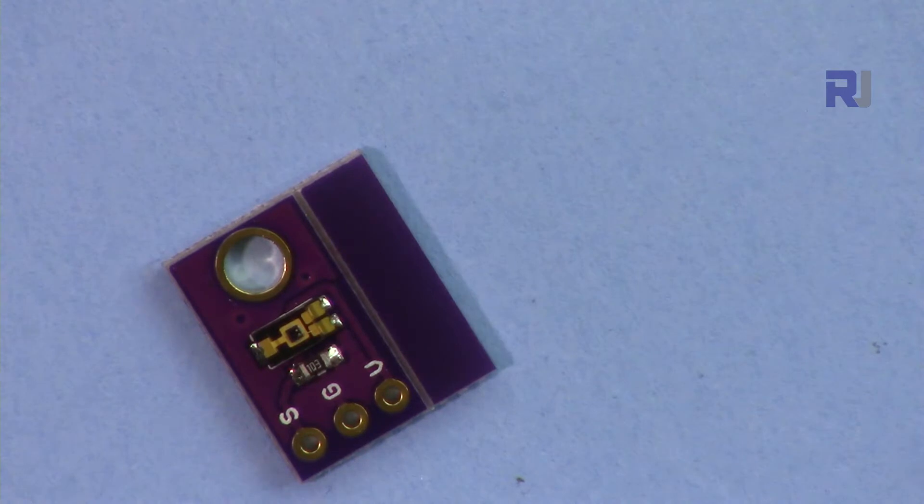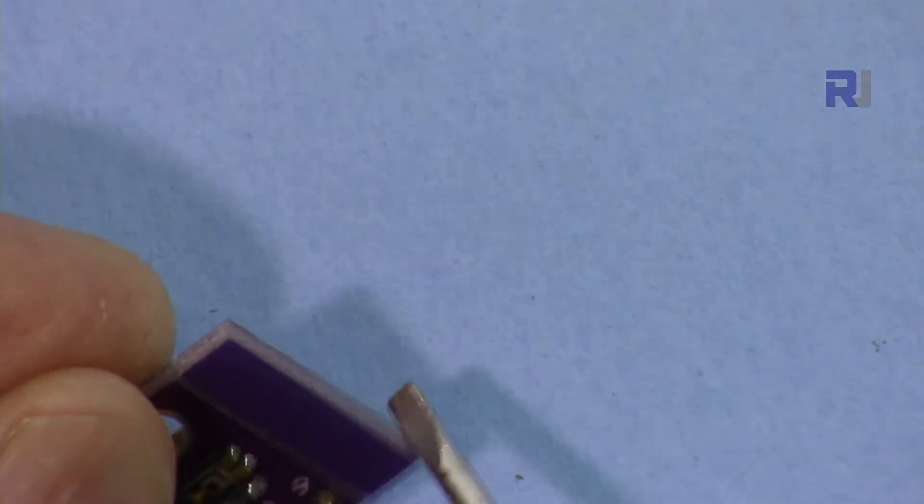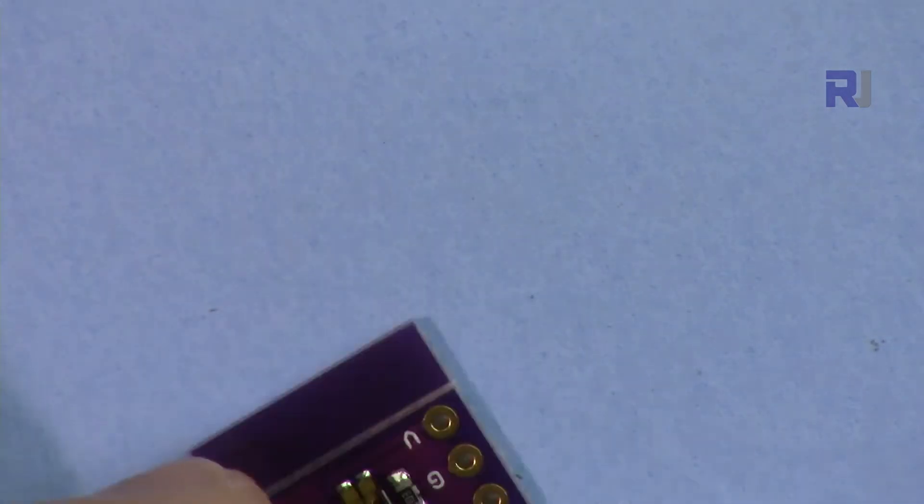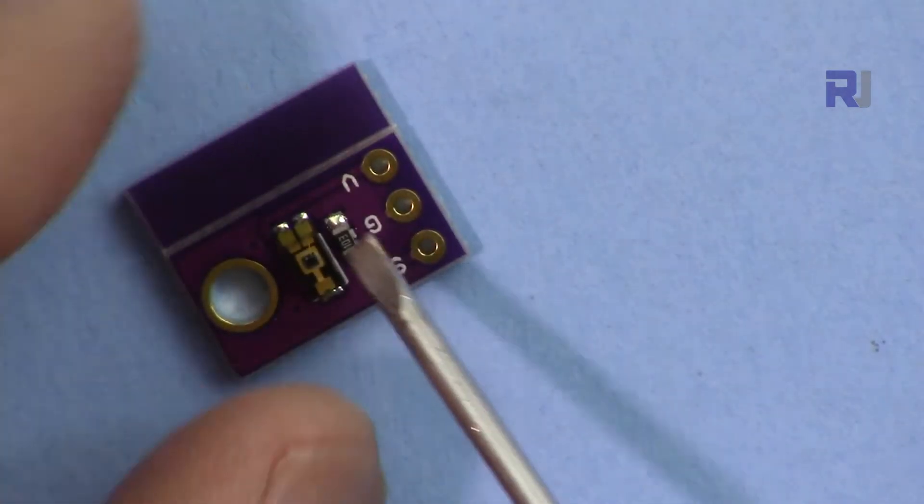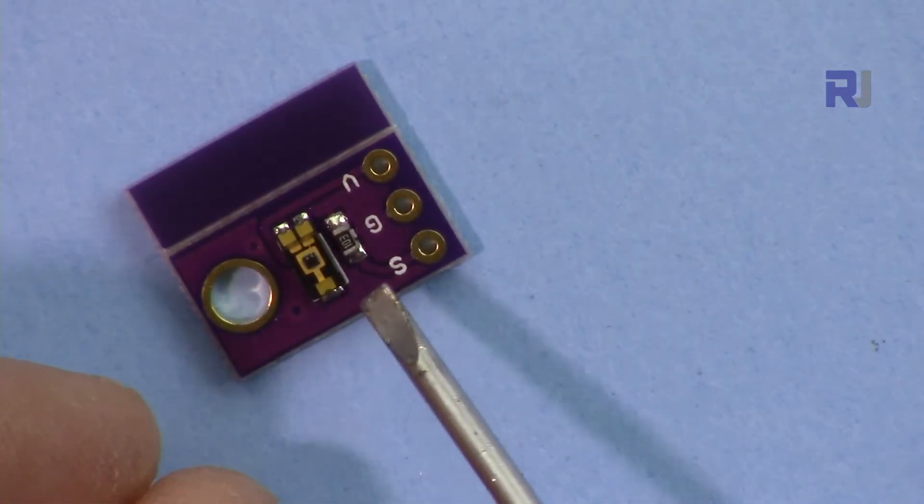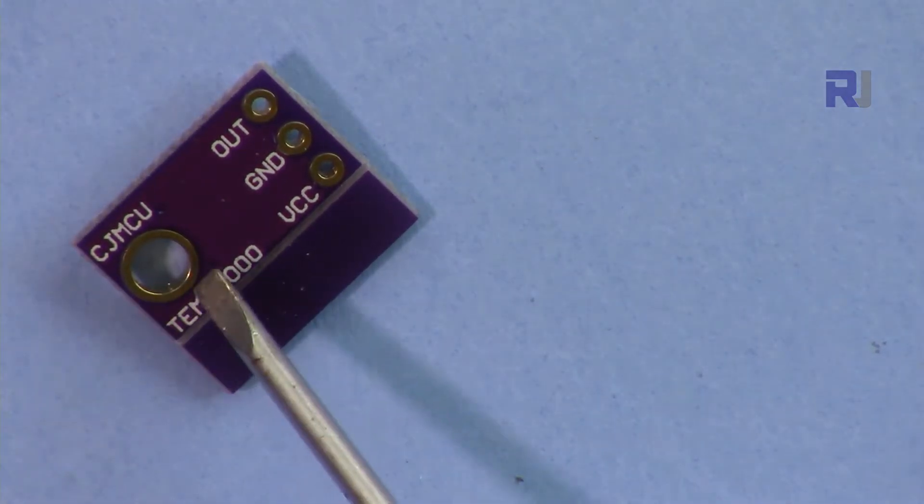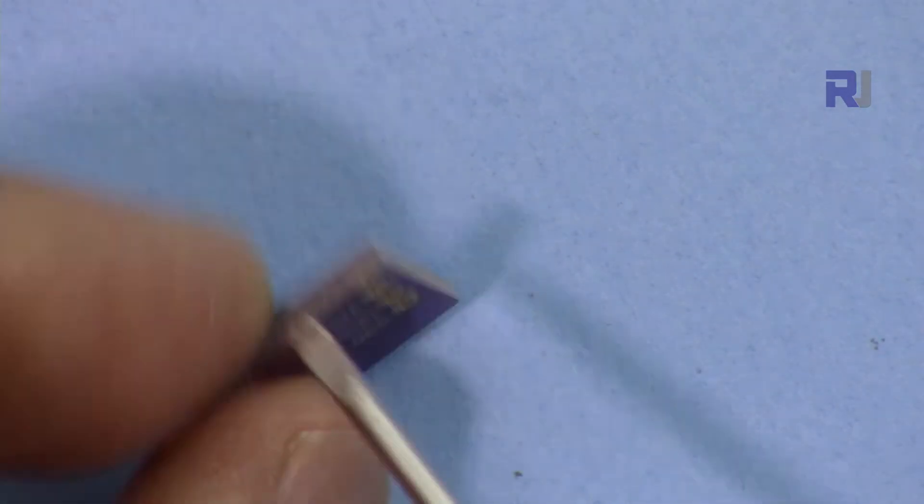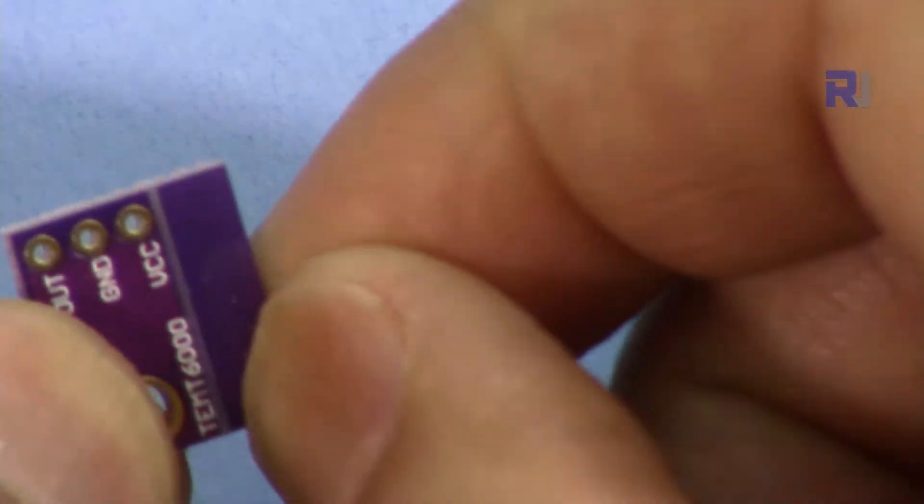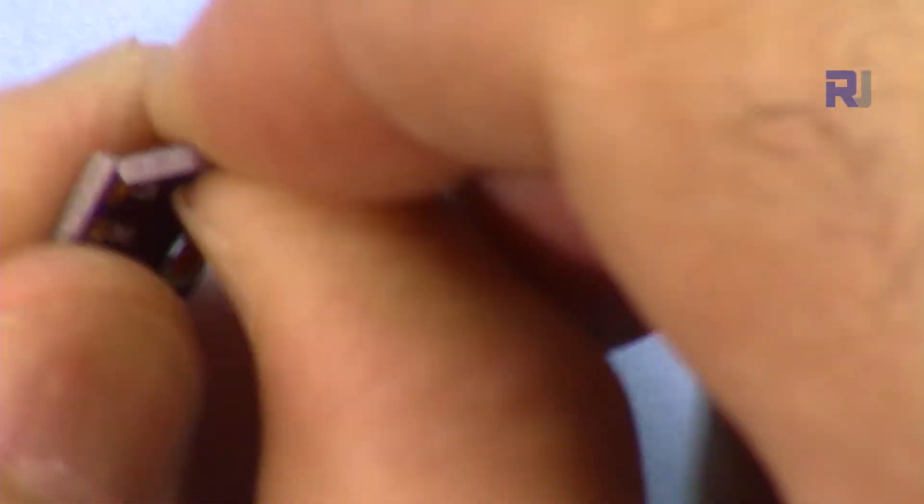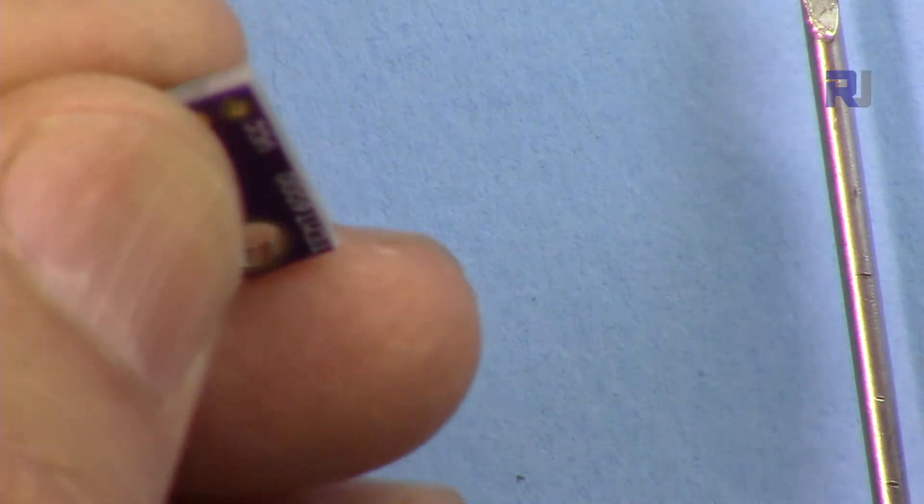This is the module. We have V, that's voltage or VCC, we have ground, and S is for the signal. The actual sensor is this one, which is very tiny. On this side we have nothing. We have a screw hole so you can screw it somewhere, but this piece can be broken and the board becomes very tiny.